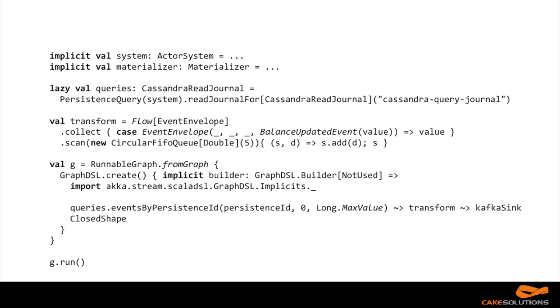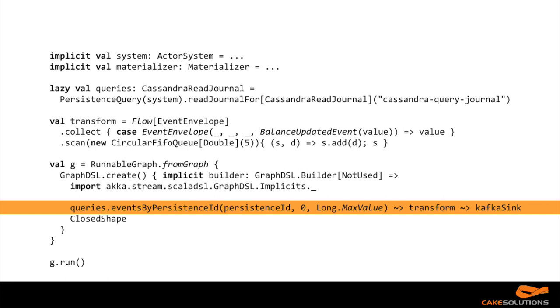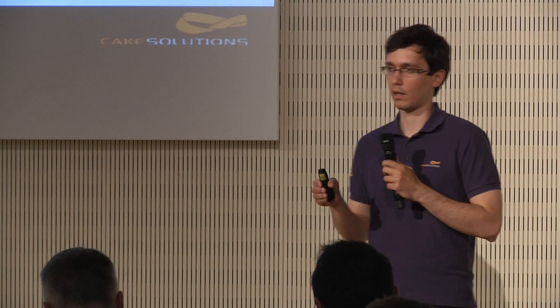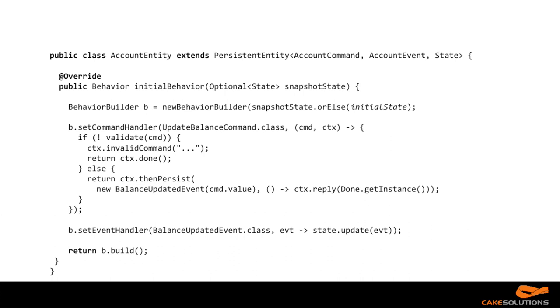This creates an Akka Stream, so we can integrate it with any other Akka Streams applications. We can do things like collect — choose the events we're interested in — or scan where we introduce some sort of state, using a circular queue as a sliding window of the last five elements in the stream. We can also use the Akka Streams graph API: subscribe to the stream, send it through a transformation that creates a sliding window of the last five elements, and send it to, for example, Kafka. We can do whatever Akka Streams allows us to do.